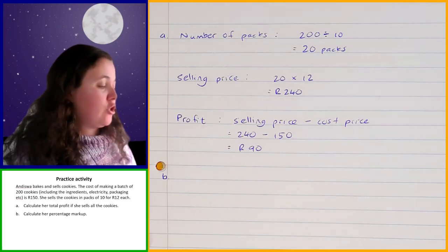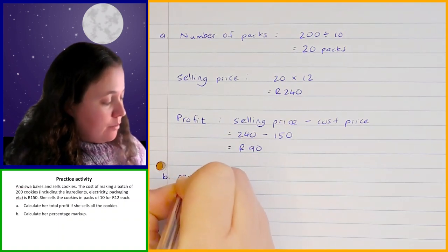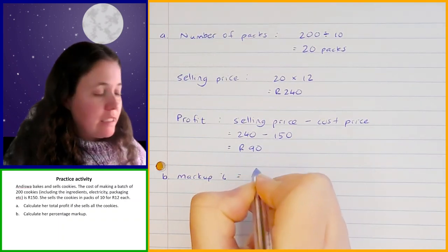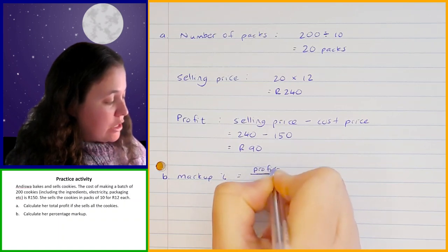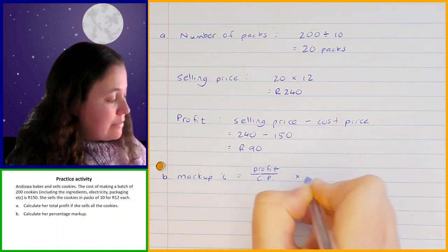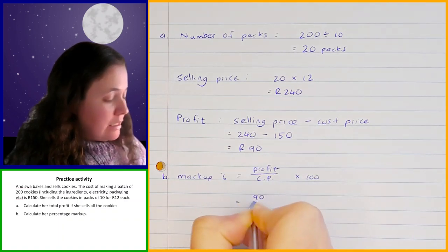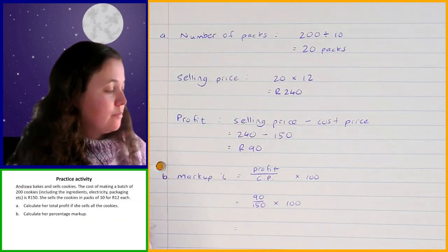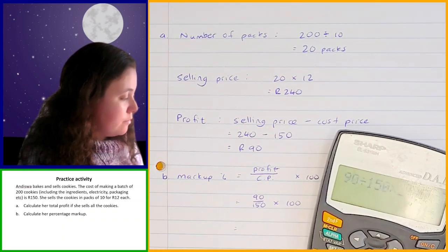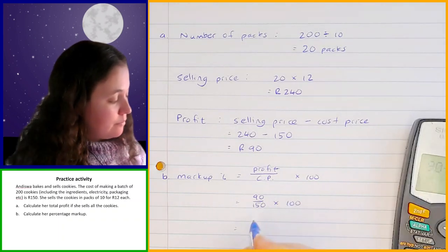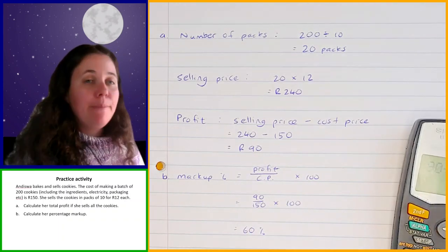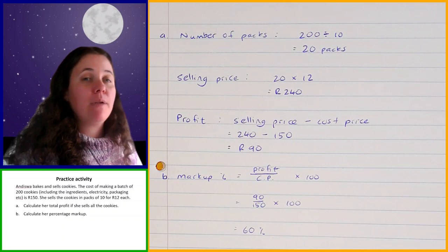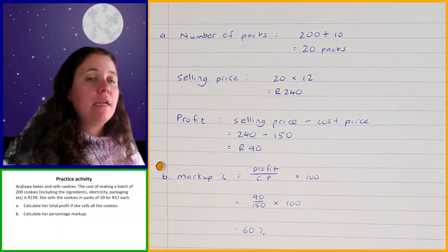So let's go through question B. To work out her percentage markup, we're going to take her profit, which was 90, and divide it by the cost price and times that by 100 to get a percentage. So that's 90 divided by 150, times by 100, and that should give you 60%. So that means that she marked the price of the cookies up by 60% based on the amount that it cost her to make them in the first place.